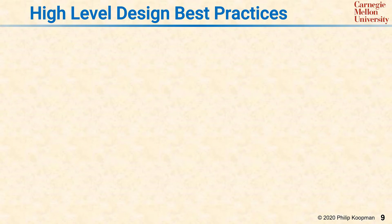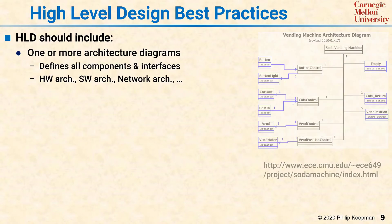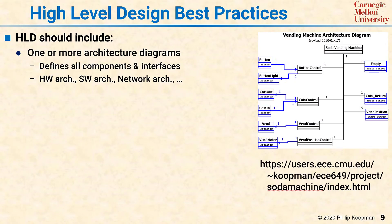Wrapping up, let's take a look at high-level design and architecture best practices. The HLD document — the high-level design document — should include one or more architecture diagrams to give you the big picture of the components and their interfaces. That might include a hardware architecture, a software architecture, or a network architecture.